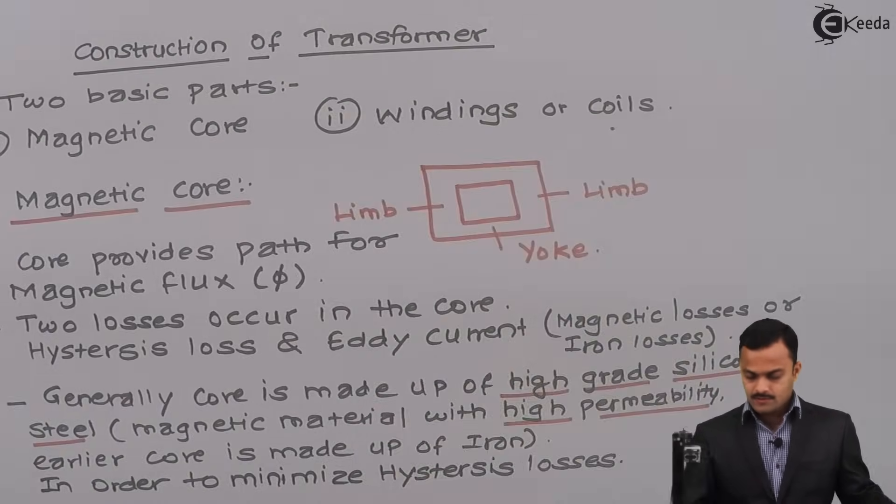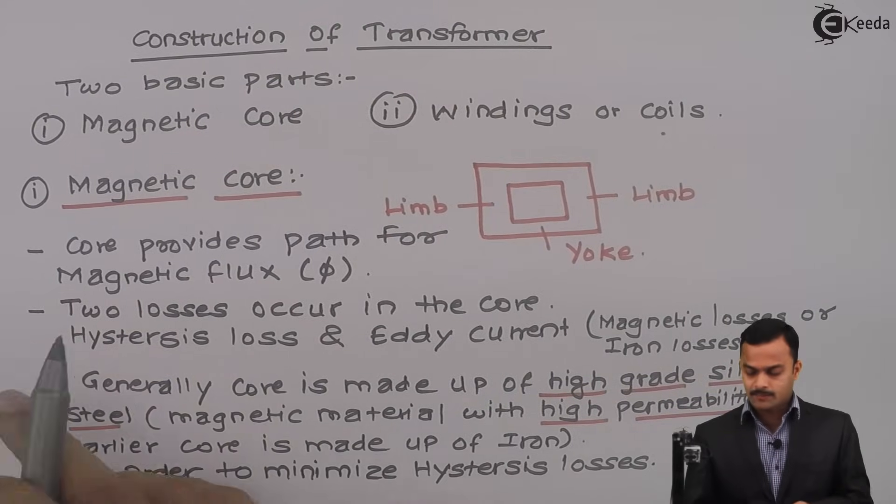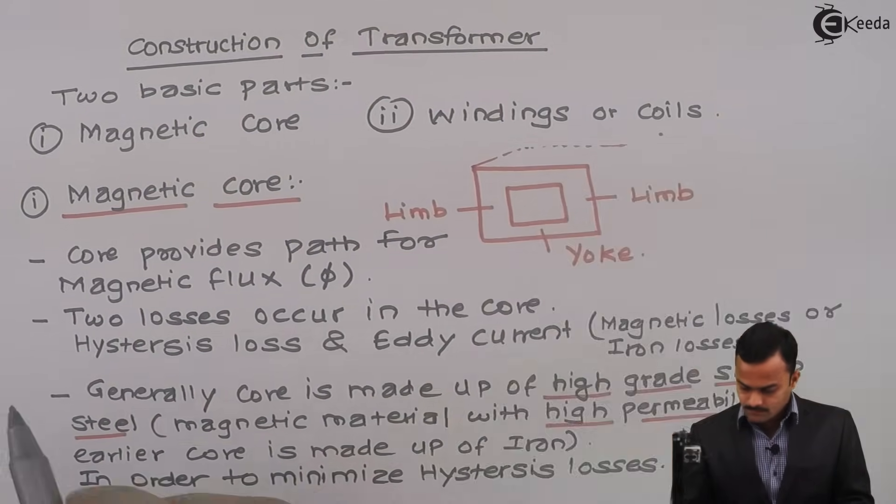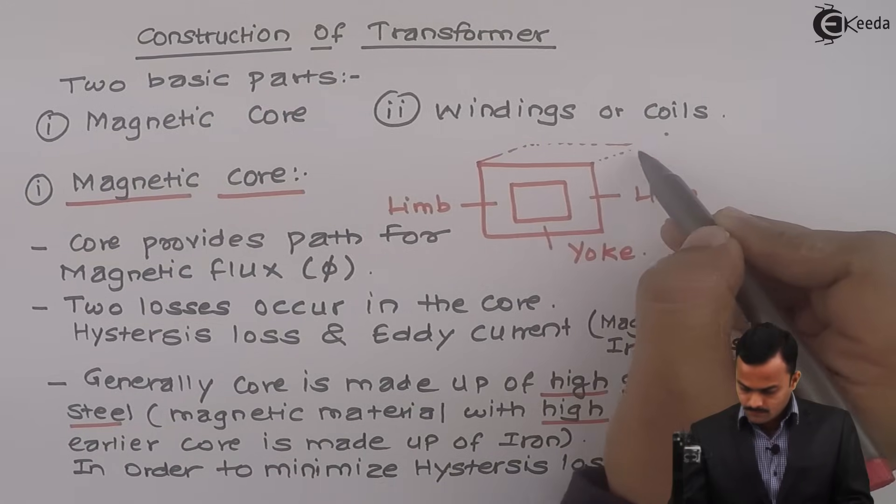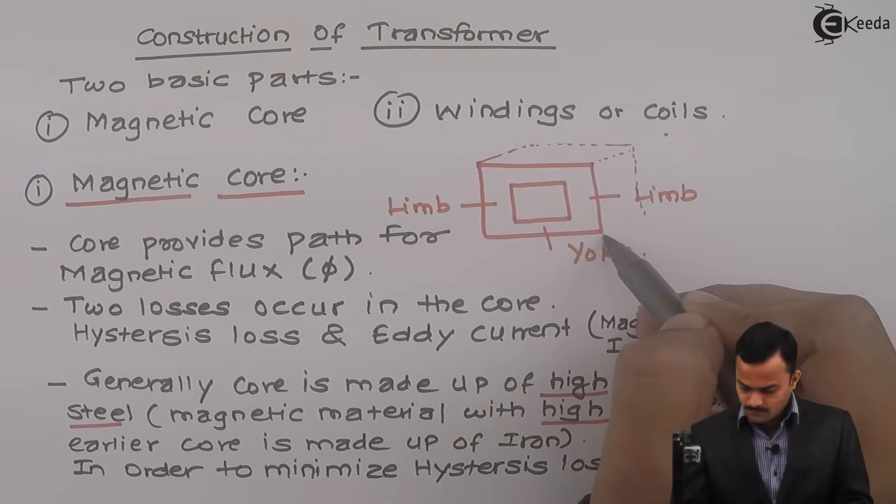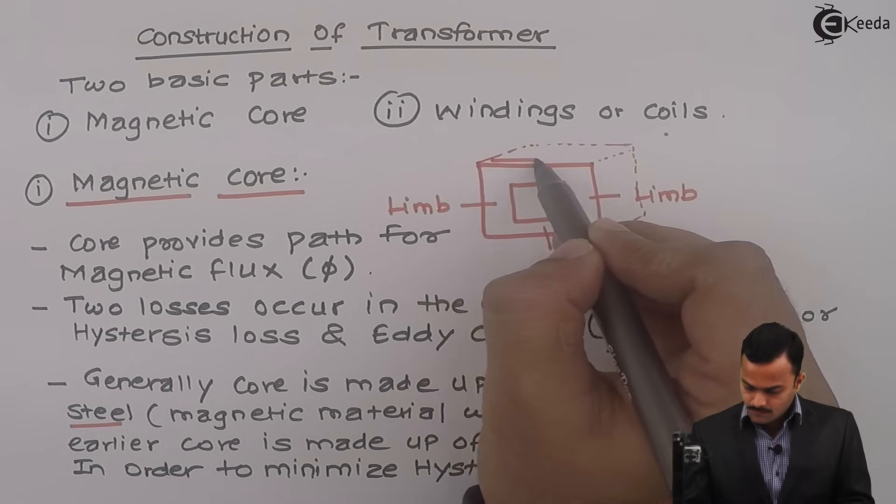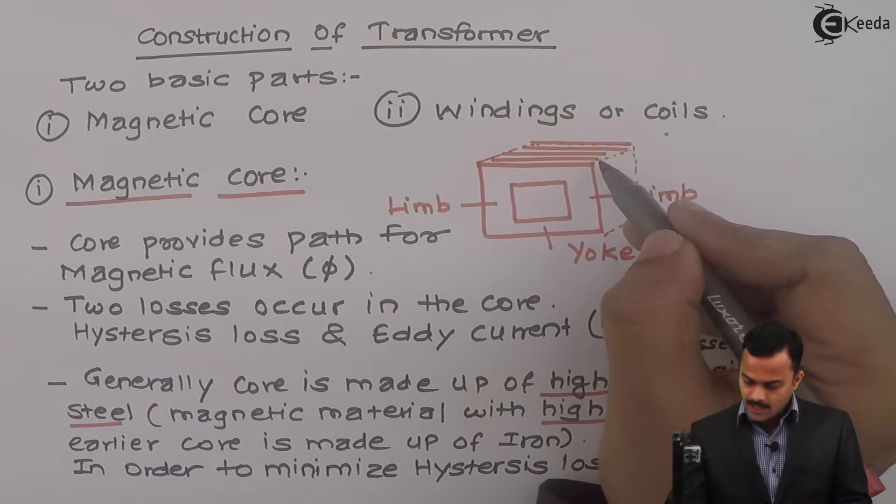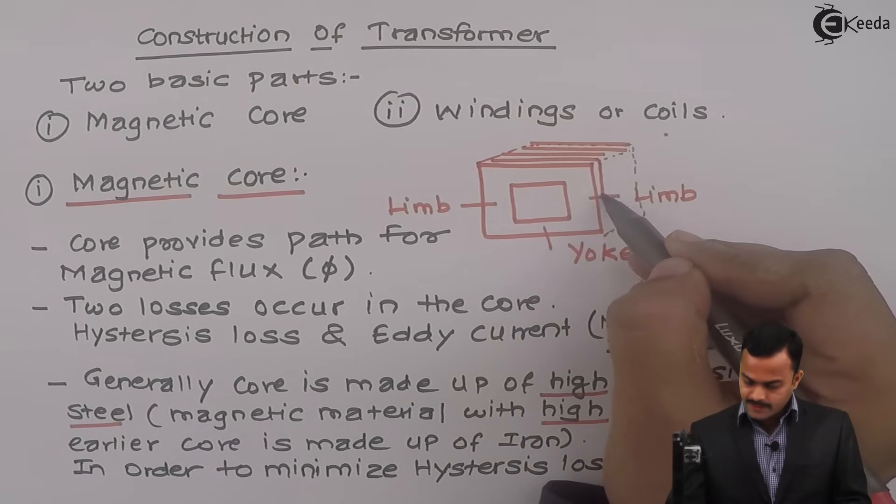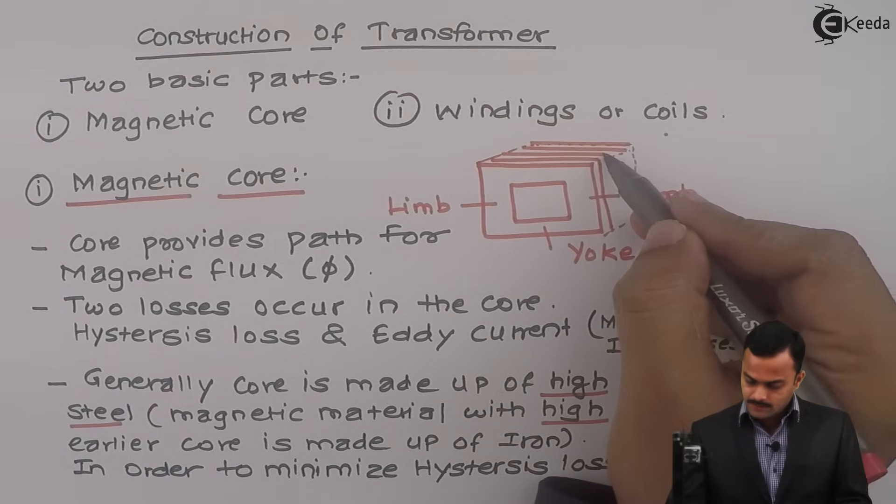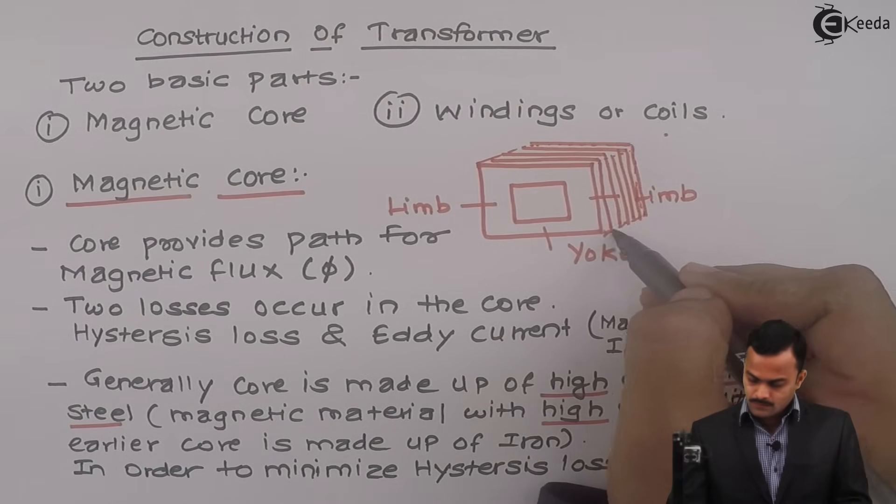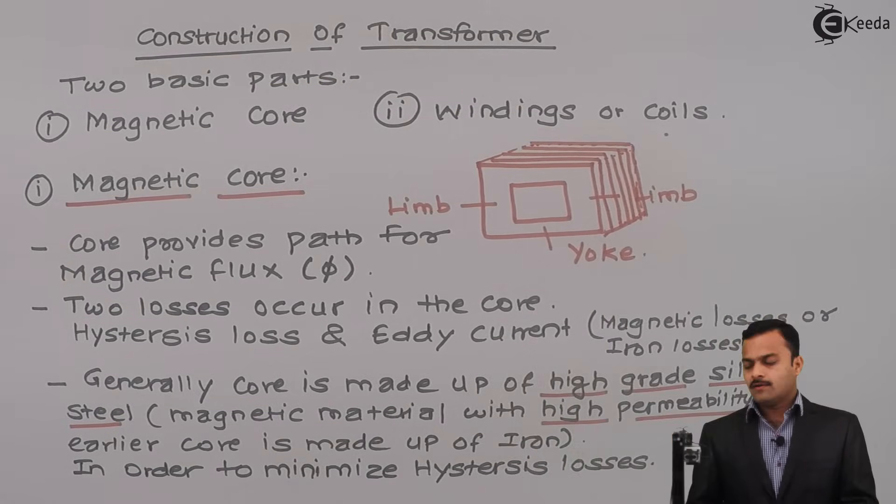So how to form a core? So this core is actually made up of thin laminations of high magnetic material like this. And this laminations are insulated from each other by varnish. So this is how core is formed.